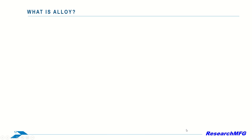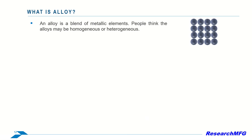Let's begin by understanding alloys. An alloy is a fusion of different metallic elements. Alloys can be categorized as solid solutions, also known as homogeneous, or intermetallic compounds, also referred to as heterogeneous.